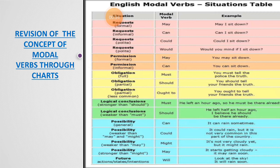Here we have a modal verbs chart — a situational table. Situations are given: requests — formal and informal — then polite and permission, then formal and informal, then obligation, then different logical conclusions, and possibility and probability, and future indications. The examples are given as well in front of you. You must go through the whole chart yourself and learn the different kinds of modal verbs.